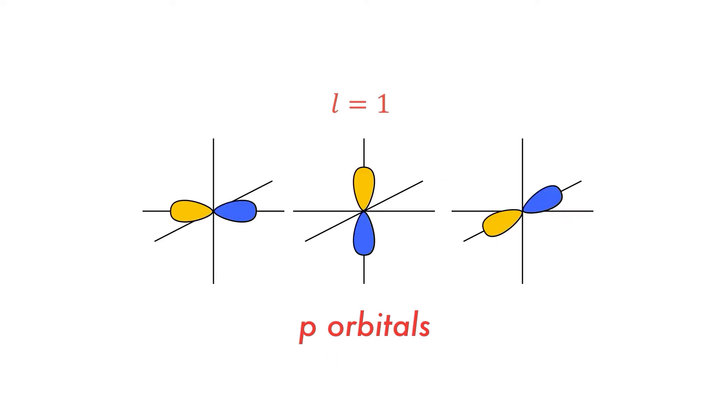When L is equal to 1, we have the p orbitals, which are lobes pointed along one of the three Cartesian axes. There are at most three p orbitals per energy level.